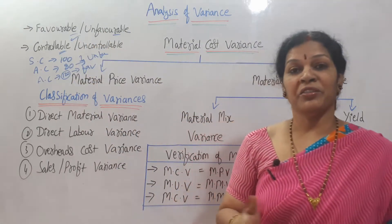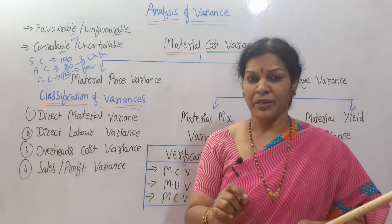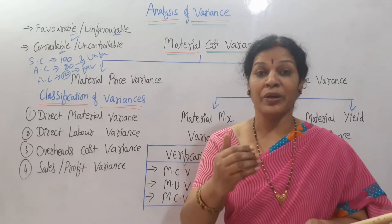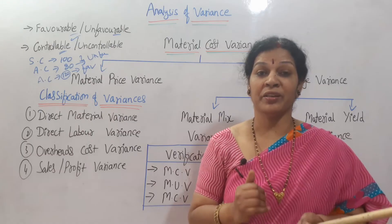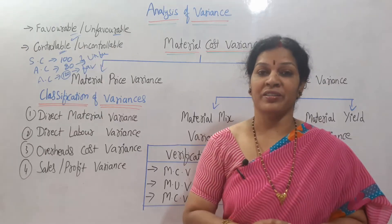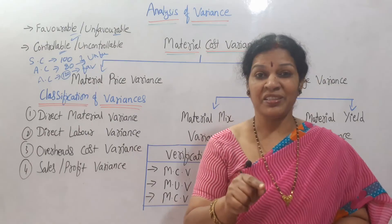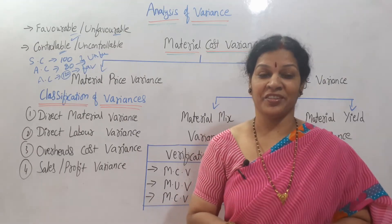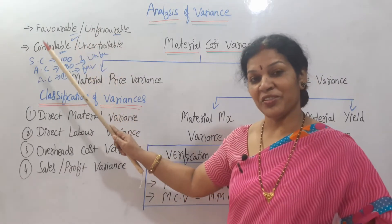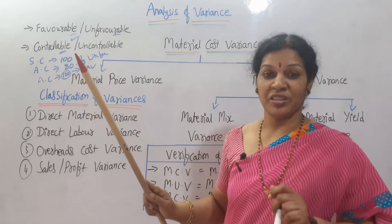When you can't manage these, costs become uncontrollable. Who decides this? It is mainly in the hands of a responsible person — a responsible officer who has been given the authority to take care of material, labor, and overheads. If that person is efficient, it is possible to control these expenses. If the person is inefficient, everything will become uncontrollable.